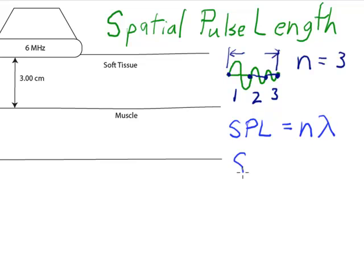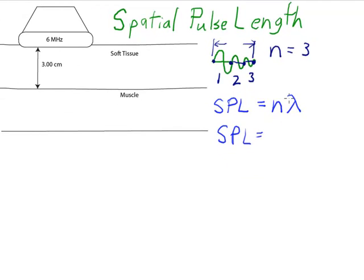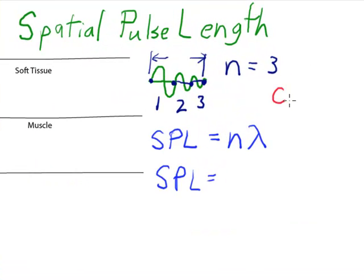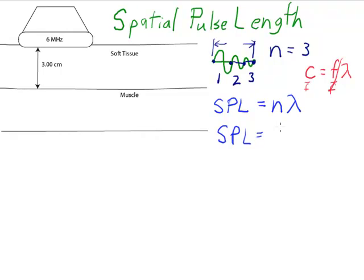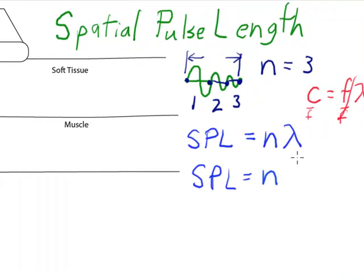We could also look at this in terms of the speed of propagation of sound and the frequency of the ultrasound transducer. If I go back to my speed of propagation formula, C equals F lambda, and rearrange that to solve for lambda by dividing both sides by F, I would get a spatial pulse length where I could replace my wavelength lambda with C divided by F.